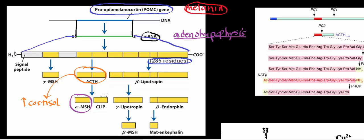ACTH, adrenocorticotropic hormone, can be processed further by another protease, ultimately yielding alpha-MSH and another protein called CLIP. We're not concerned about CLIP here — what we're concerned about is alpha-MSH and how we get it.